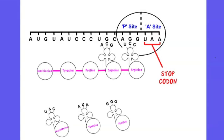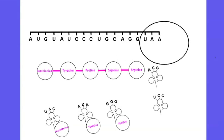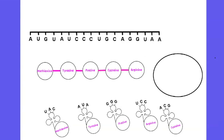Once the process has been terminated, the polypeptide chain, tRNA, ribosome, and mRNA detach, and the polypeptide chain becomes free-floating in the cytoplasm.